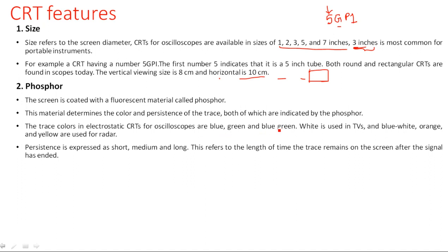Depending upon the time the signal remains, persistence is classified into short, medium, long, and very long. Colors such as blue-green and white are generally used in TVs — specifically old CRT box TVs, which had a CRT screen internally. CRT is the heart of any display unit that uses an electron gun to deflect the electron beam.